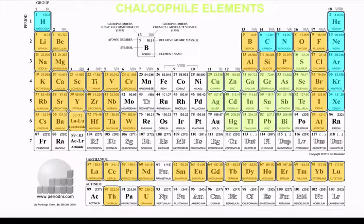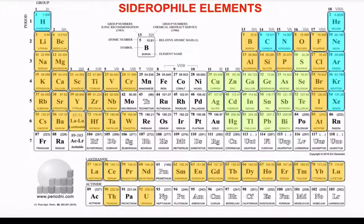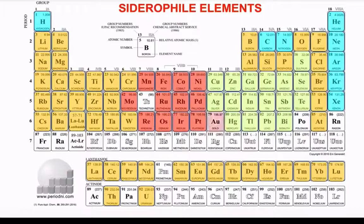The final group we need to identify are what we call the siderophiles. Siderophile literally means iron-loving. These are very high-density minerals that tend to sink within the earth because they dissolve readily in iron. These minerals tend to be quite rare in the crust in most cases, but are very common deep within the earth.